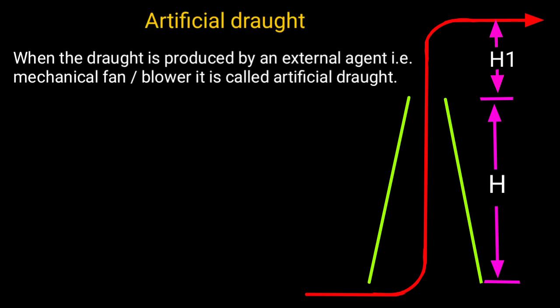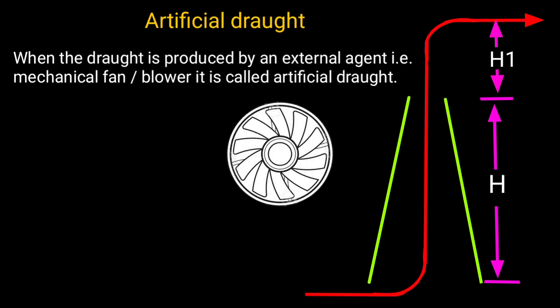Artificial draught. When draught is produced by an external agent, i.e., mechanical fan or blower, it is called artificial draught.